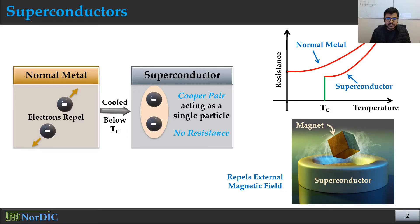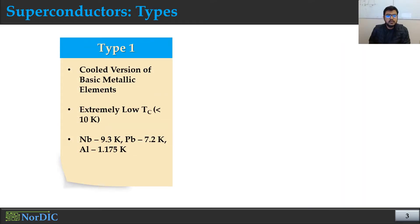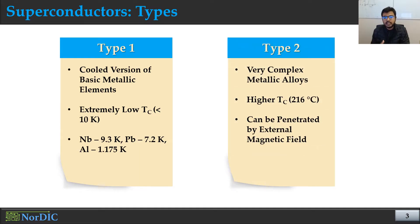There are two types of superconducting materials. The first is Type 1 superconductors, which are cooled versions of basic metallic elements — for example niobium, lead, and aluminium. The critical temperature of this type of superconductor is extremely low, less than 10 Kelvin. On the other hand, Type 2 superconductors are very complex metallic alloys and typically have a much higher critical temperature compared to Type 1 superconductors.